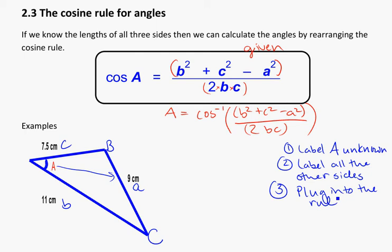So taking a look at how we can plug this in, I've got cosine of A is equal to bracket B squared, so 11 squared, plus C squared, which is 7.5 squared, minus A squared, which is 9 squared, bracket. All over, which is the same as using divide as well, if you prefer to think about it that way. Bracket 2 times 11 times 7.5 in brackets.